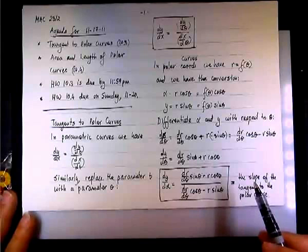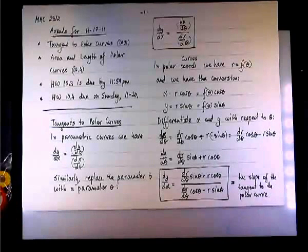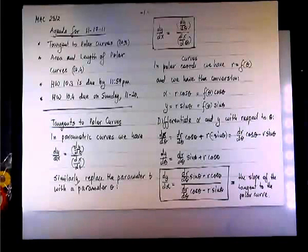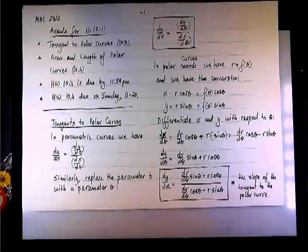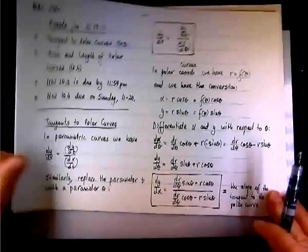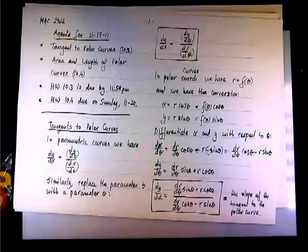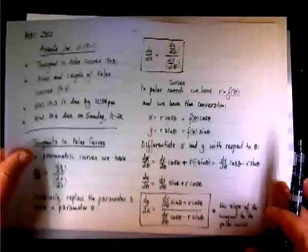There's a slight ambiguity here: we're talking about the polar curve, yet we're looking at dy/dx. Everything will be expressed in terms of r and theta. But we can place the polar curve on a Cartesian system with the pole at the origin, and the slope of the curve at any given point will be this dy/dx expression.